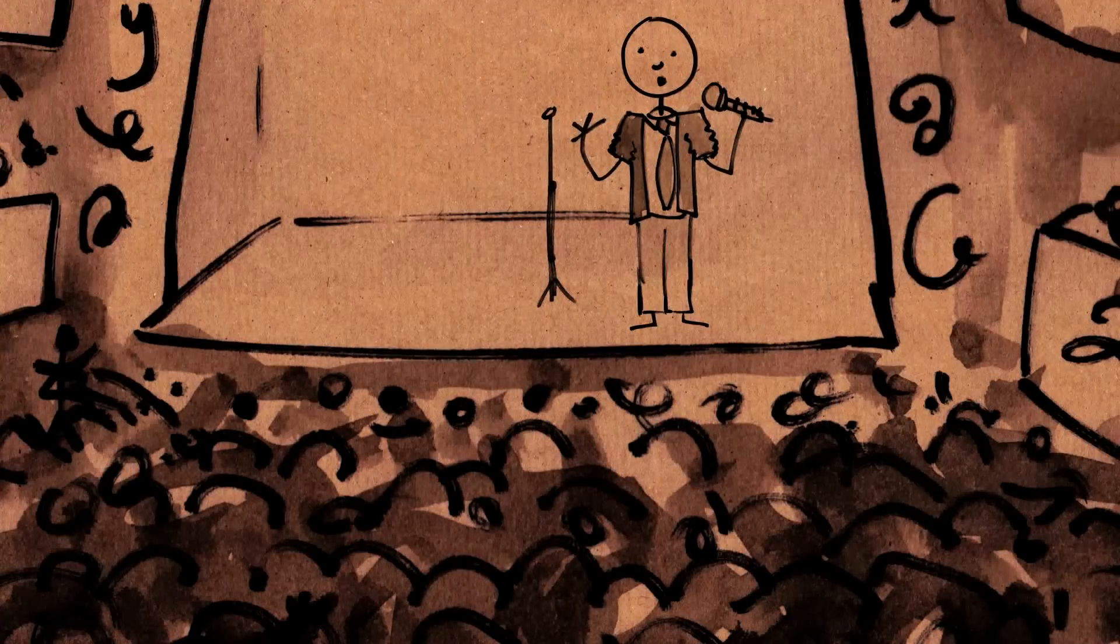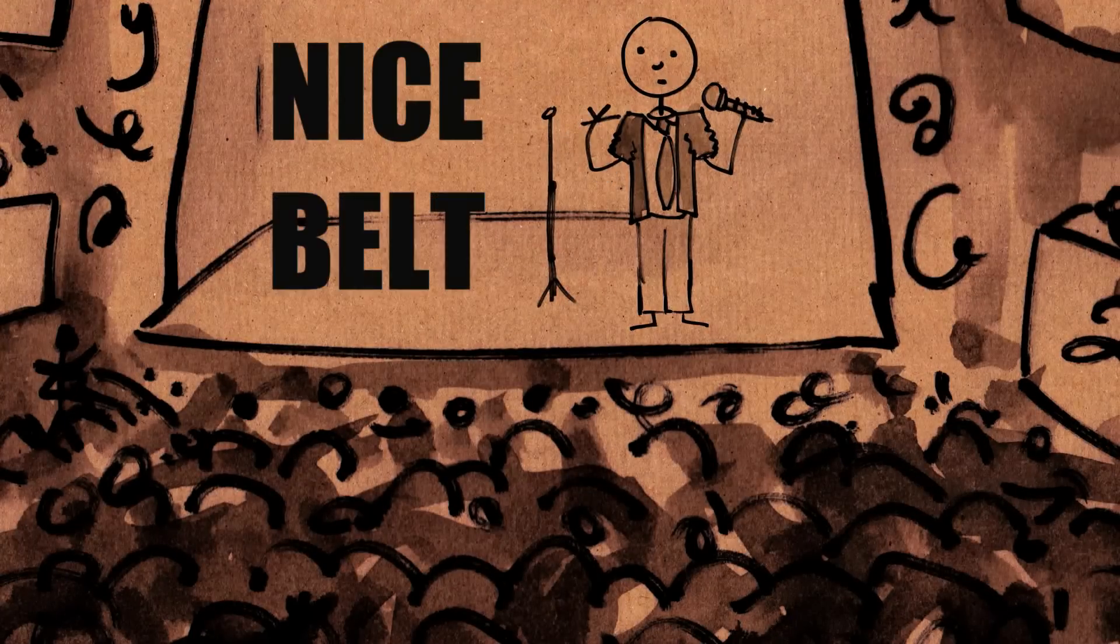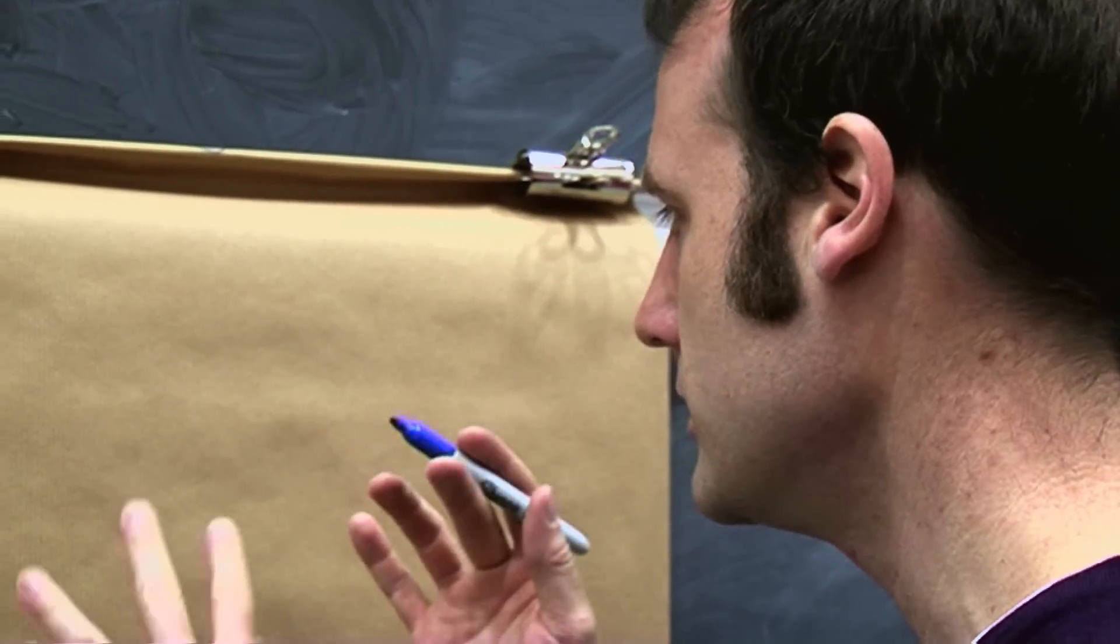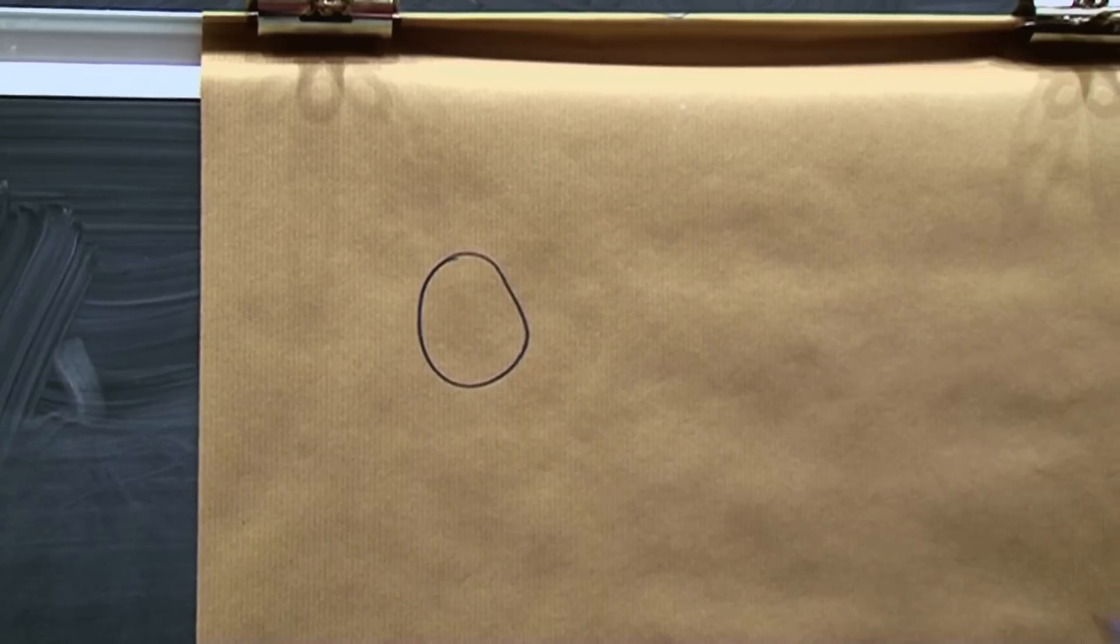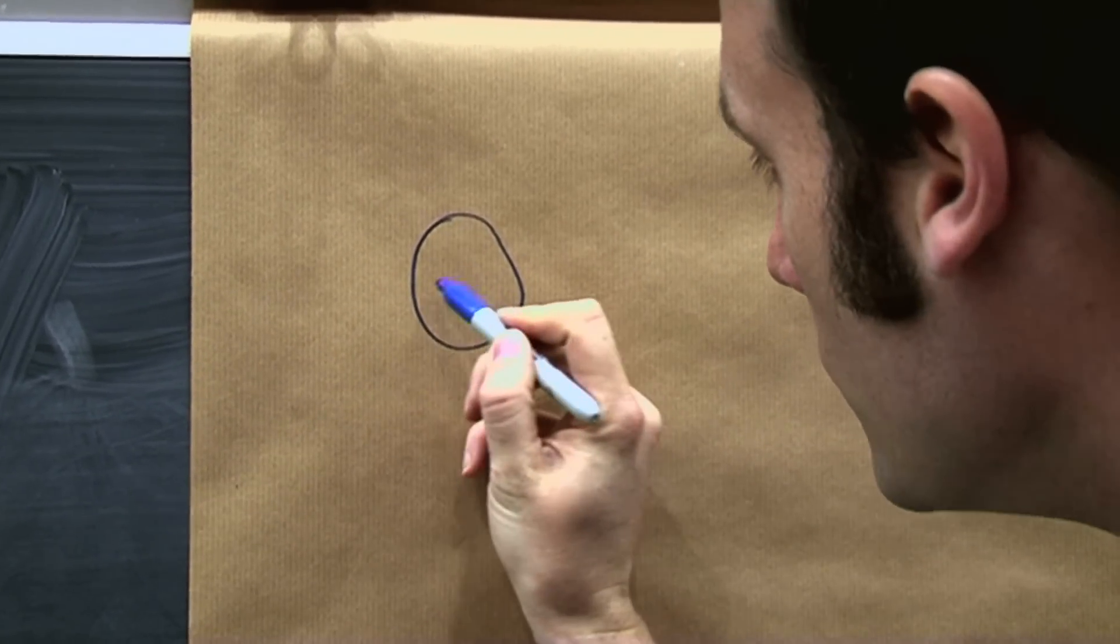What did the number zero say to the number eight? Nice belt! Alright, okay, I guess so. So zero looks a bit like this. And if you imagine putting a belt around zero and then tightening it,